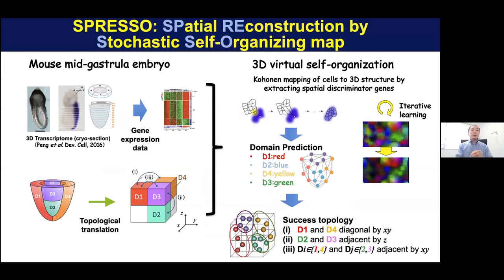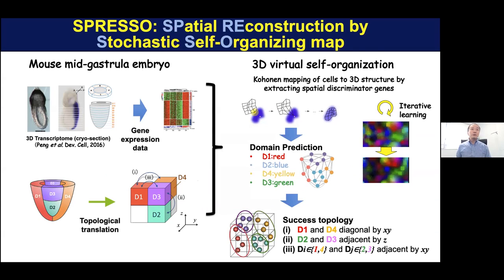In our first project, which is our previous study, we used mouse midgastrula embryo, where we obtained cryo section data with 41 gene expression sections. And we somehow translated this domain structure — there are four domains involved — and we translated this topology to machine-readable ones, such as a cubic structure.